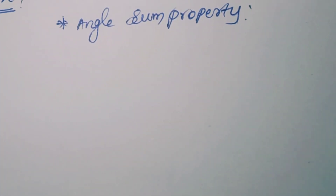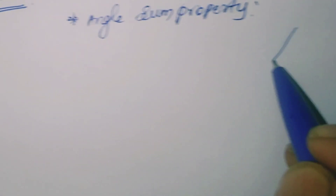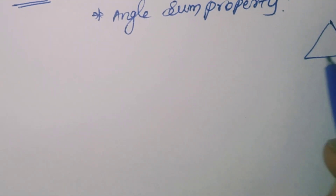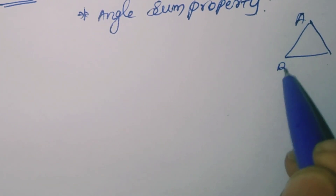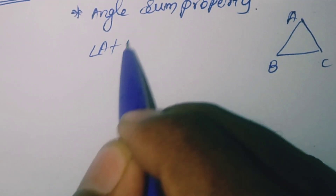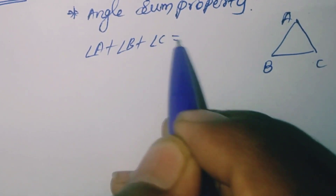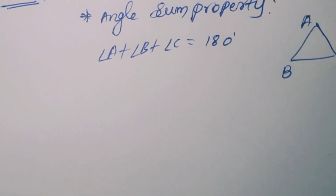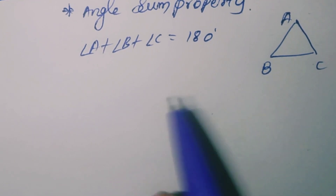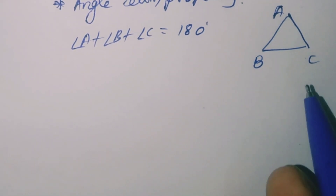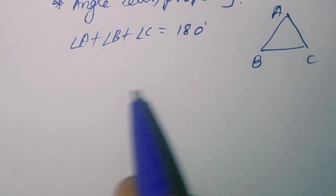First, the angle sum property. The sum of all angles of a triangle is 180 degrees. If you take a triangle with angle A, angle B, and angle C, then angle A plus angle B plus angle C equals 180 degrees. Based on this property, we find unknown angles.